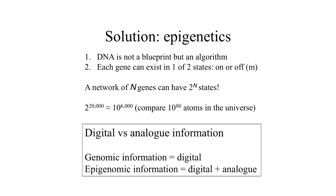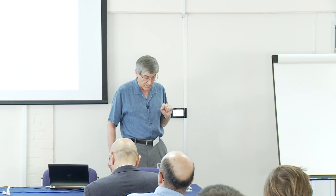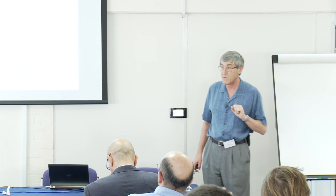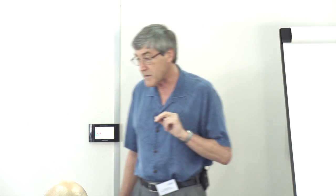Genes can exist in one of two states: on or off. One way to switch off a gene is to methylate it — GC bonds in the DNA have a methyl molecule attached, and that silences them. I'm going to be talking about the work of Stuart Lindsay at Arizona State University. He and his student Palminder discovered just last year the mechanism whereby methylation silences a gene.